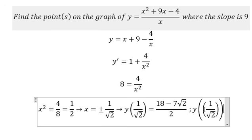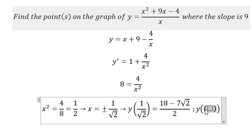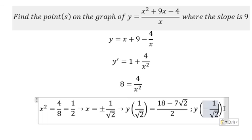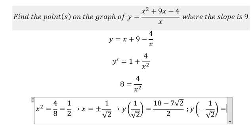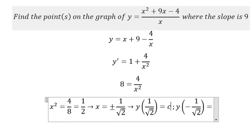We put negative 1 over the square root of 2, and we get this value but we change the sign to positive, giving us 18 plus 7 square root of 2 over 2.